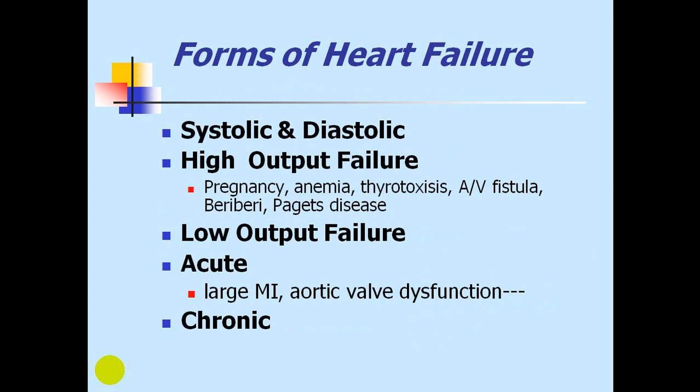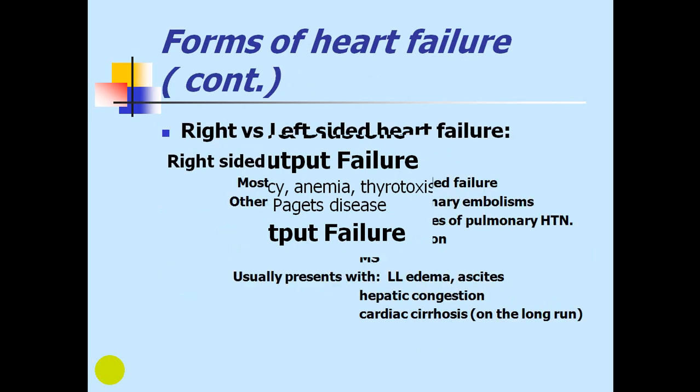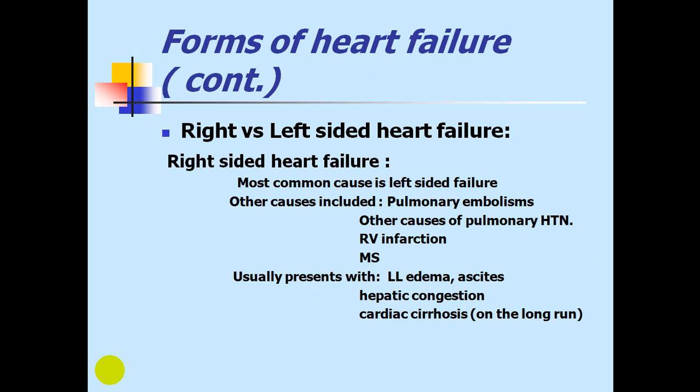Other forms of heart failure include systolic and diastolic heart failure as mentioned, high output heart failure seen in pregnancy, anemia, thyrotoxicosis, AV fistula, and Paget's disease of the bone. There is also low output failure, and the distinction between acute versus chronic, and right-sided versus left-sided heart failure. Right-sided failure is most commonly caused by left-sided failure, or pulmonary causes such as pulmonary embolism, chronic pulmonary disease, other causes of pulmonary hypertension, RV infarction, and mitral stenosis.